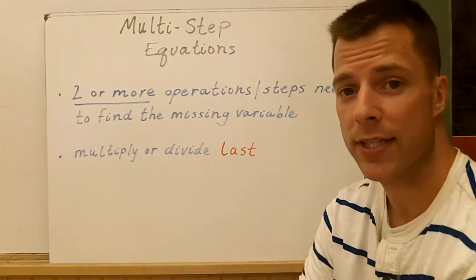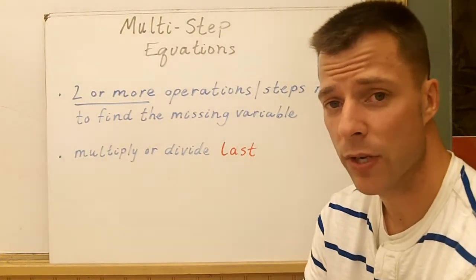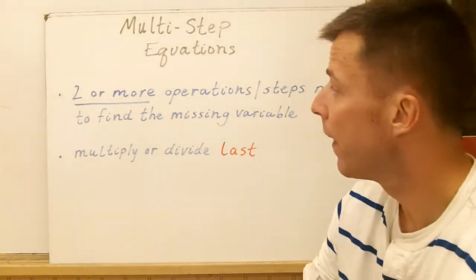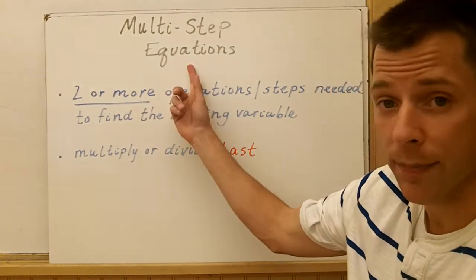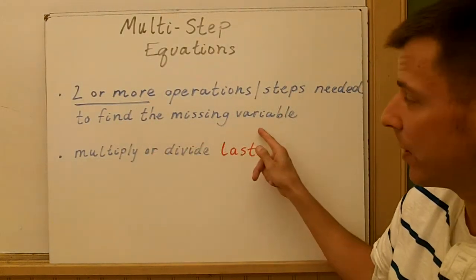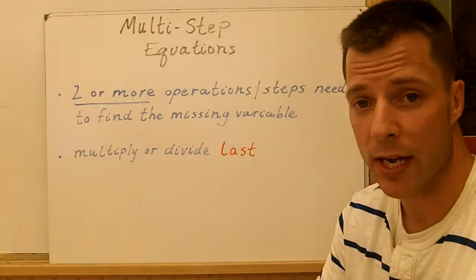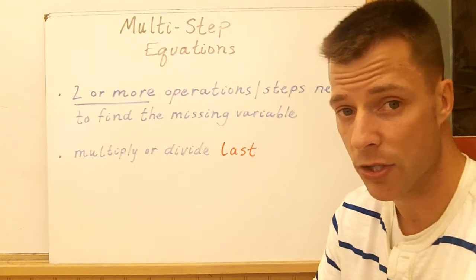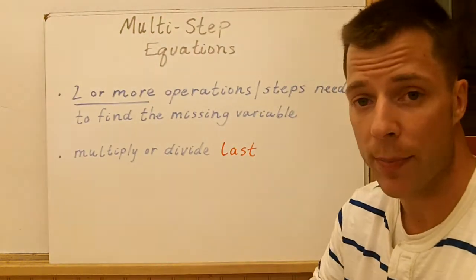All right, today we're going to talk about solving multi-step equations. In the first video we looked at one-step equations with one operation. When we look at multi-step equations, there are two or more operations or steps needed to find your missing variable. Most likely it's going to be a combination of adding and multiplying, or adding and dividing, or subtracting and multiplying, but there's at least two operations there.